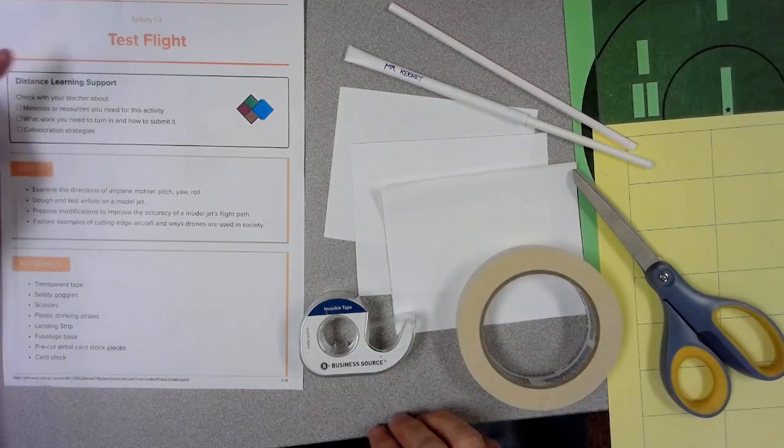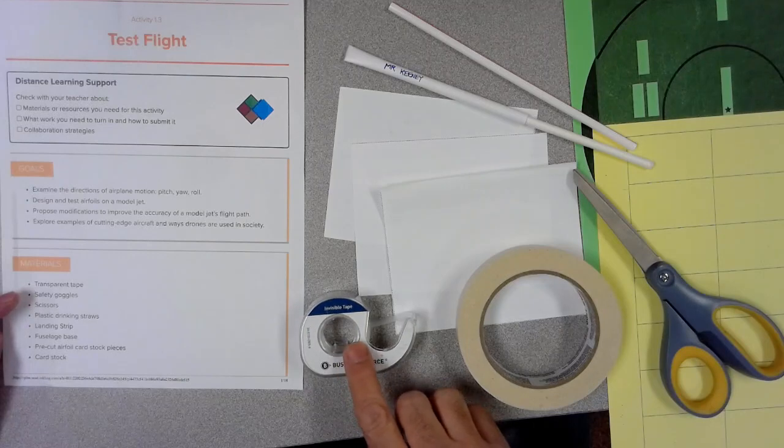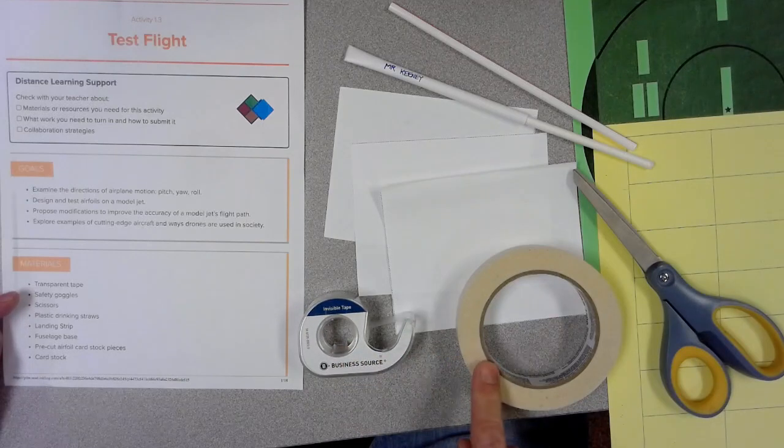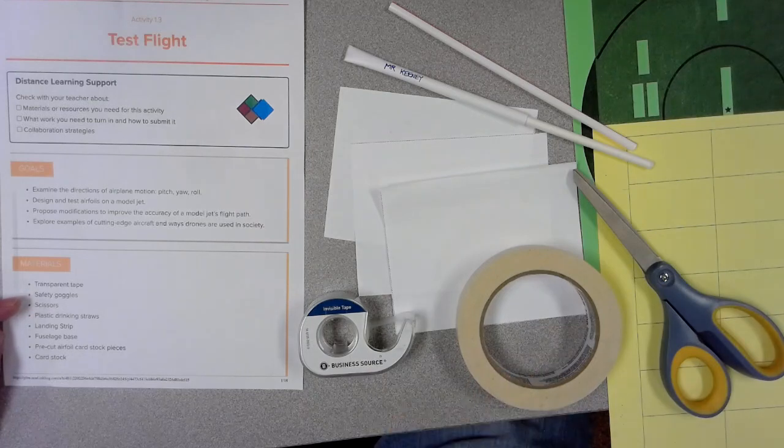Going back to our test flight material list, you're going to need the transparent tape again today. It works much better than masking tape since masking tape is much heavier. You'll need your safety glasses for when you test your flying object.